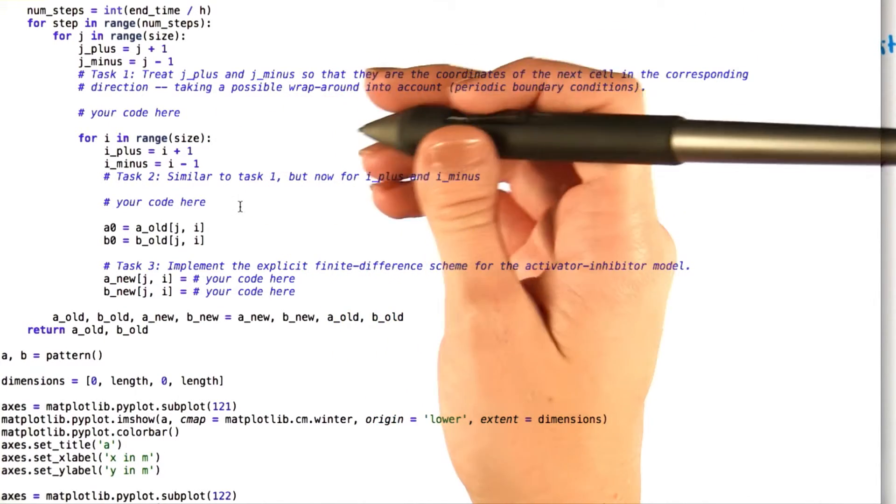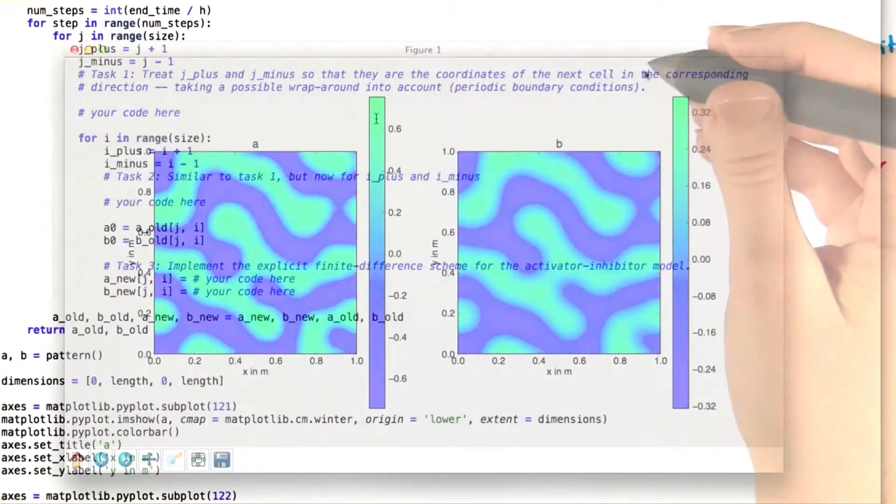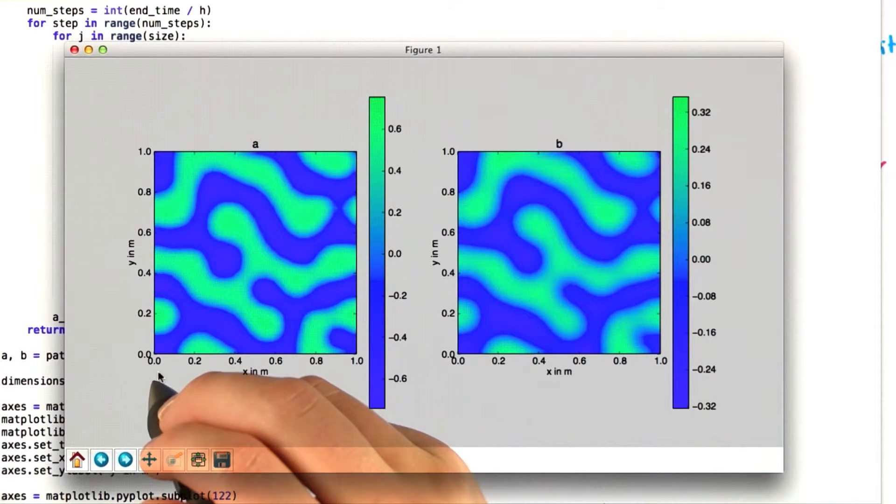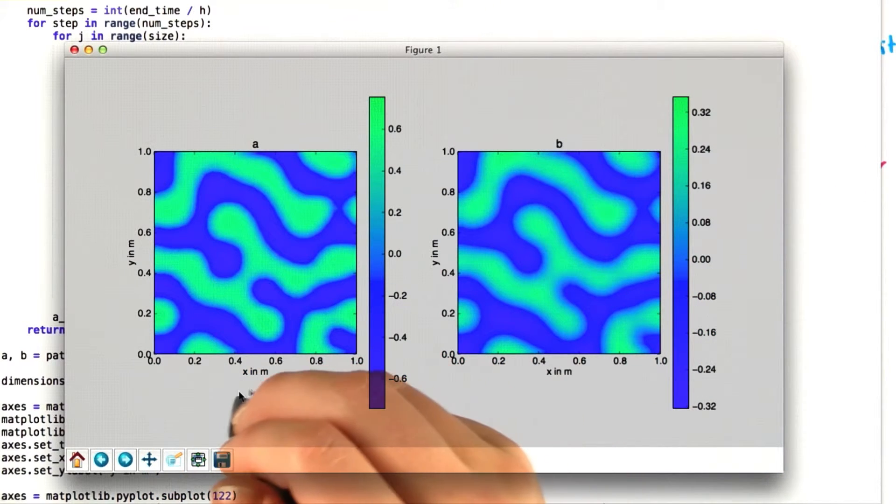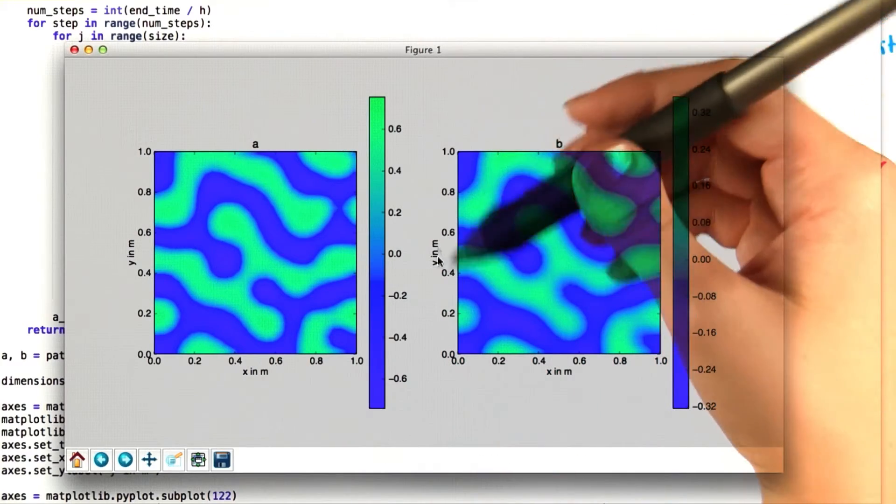In the end, you should come up with some pretty interesting looking patterns. I'm just going to give you a sneak peek of what you should end up with. So here's what you'll get with your final plot. We have one graph showing the concentration of the activator throughout the entire space we're considering, and the other graph showing the concentration of the inhibitor.